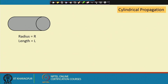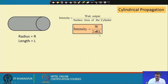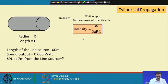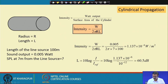For a line source example: length L = 100 m, output = 0.005 W, and the receiver is 7 m away. Using I = W/(2πrL), we calculate the intensity and convert to a decibel level of approximately 60.5 dB. For cylindrical propagation, the SPL difference between distances r₁ and r₂ is SPL₁ − SPL₂ = 10 log(r₂/r₁). If the distance doubles, the drop is 10 log 2 = 3 dB — half of the spherical case.